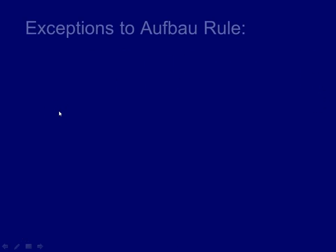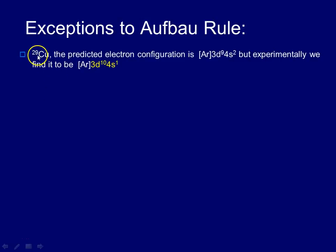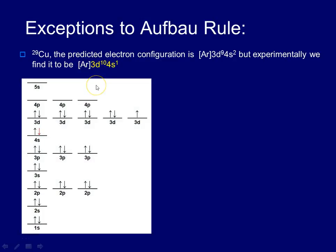The second exception that we talk about is copper, atomic number 29. Again, the Aufbau prediction would be 3d⁹ with 4s². But experimentally, what we find is that we get 3d¹⁰ and 4s¹.